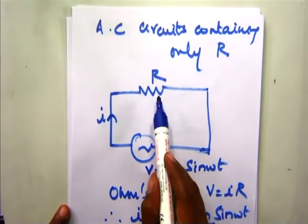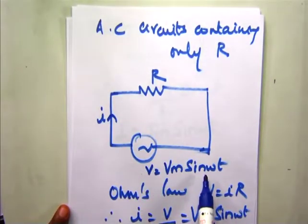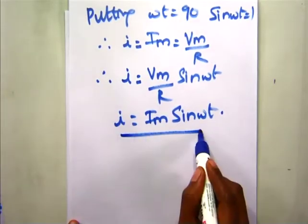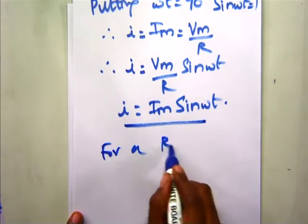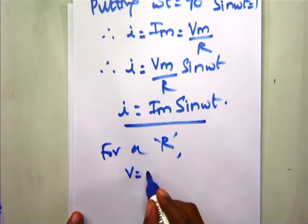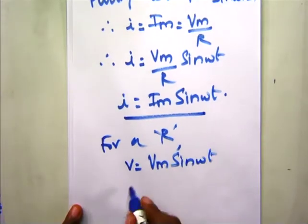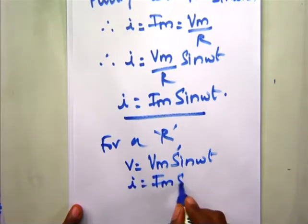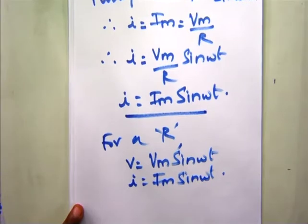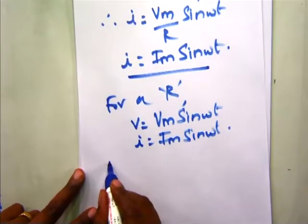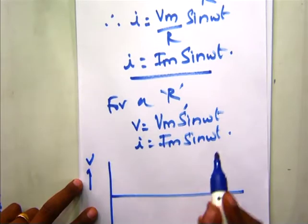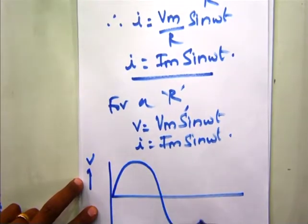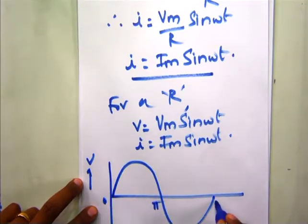We have seen that the resistor was connected to an alternating voltage source V equal to Vm sin omega t, and we have derived that the current in the circuit I equals Im sin omega t. If we plot both these waveforms, V equals Vm sin omega t follows the sinusoidal rule: at 0, pi, and 2 pi the value of V is 0, and at omega t equal to pi by 2 we have the peak value.